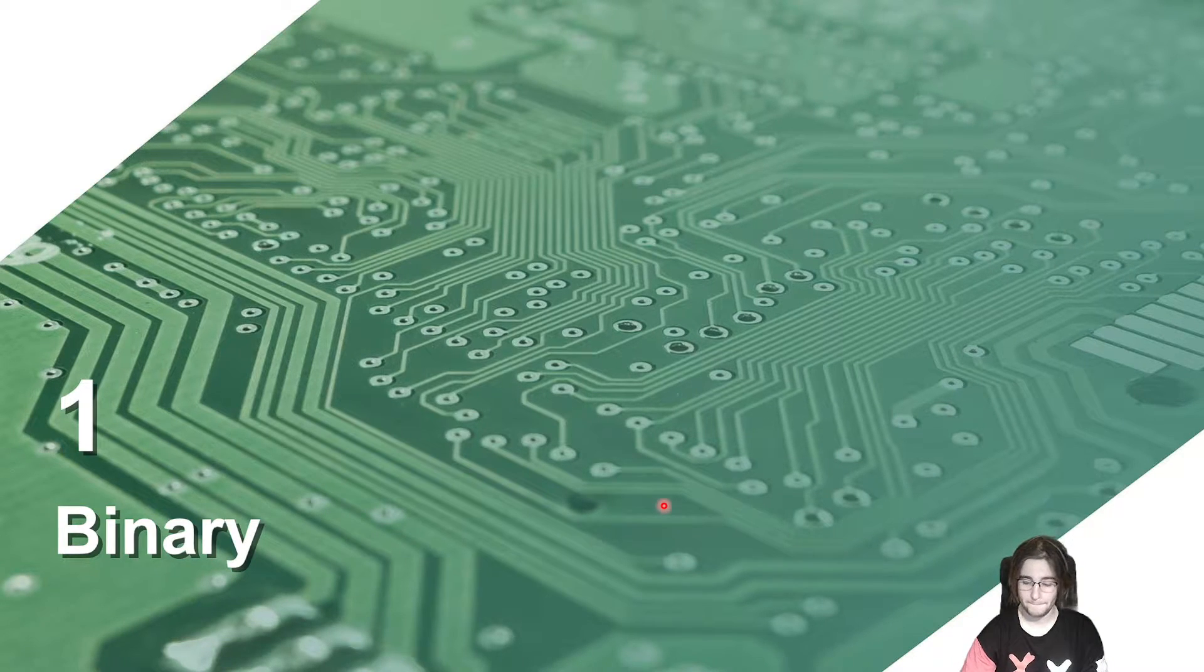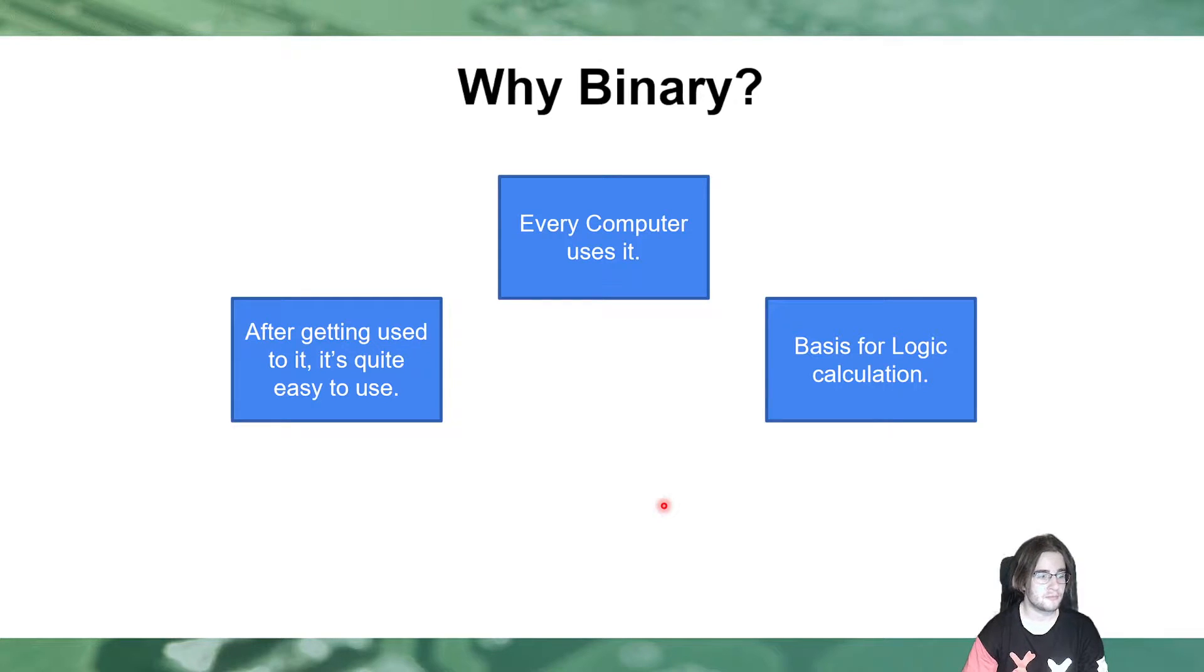And binary, well, why even binary? Why do you need to understand a whole new number system? First of all, every computer uses it. Every computer is running on binary. The one exception might be quantum computers, which kind of use binary, but also work a bit different than the standard binary. But I'm not going to pretend I understand any of that. Because if you think you understand quantum computers or quantum mechanics, then you definitely do not understand it, because it is just that weird.